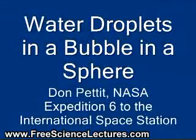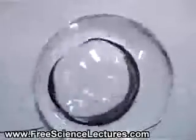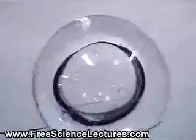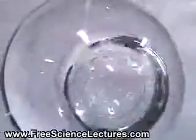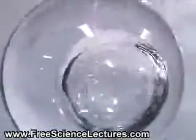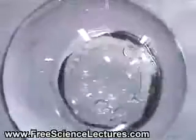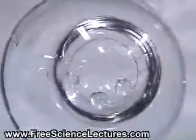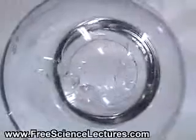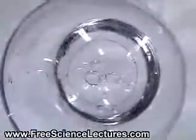Water droplets in a bubble in a sphere. Here we have a sphere of water 75 millimeters in diameter with an air bubble inside about 35 millimeters in diameter, and we inject water droplets anywhere from 1 to 8 millimeters in diameter into the bubble and look at the resulting collision dynamics where they collide with each other and the walls.